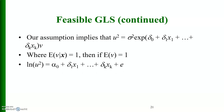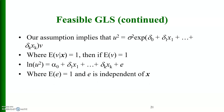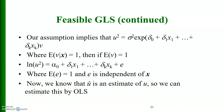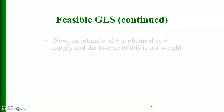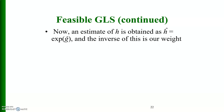Taking the natural log of u squared gives: ln(u squared) equals alpha naught plus sigma 1 x1 up to sigma k xk plus e, where the expected value of e equals 0 and e is independent of x. Since u-hat is an estimate of u, we can estimate this equation by OLS. An estimate of h is then obtained as h-hat equals exp(g-hat), and the inverse of this is our weight.